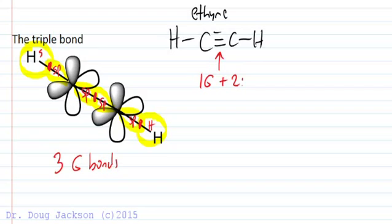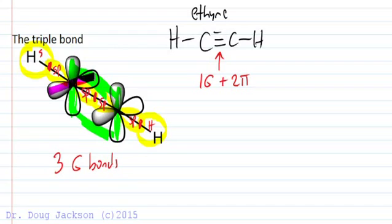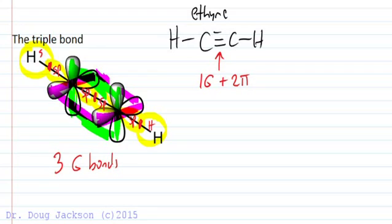The other two bonds in the triple bond are pi bonds. The py orbital, oriented straight up and down along the y-axis, overlaps to form one pi bond. The pz orbital for each carbon, in the plane coming toward and away from us in the page, overlaps perpendicularly to the py orbital to form a second pi bond. So the triple bond is composed of one sigma and two pi bonds. Overall, ethyne has three sigma bonds and two pi bonds — five total bonds, which matches the five lines in the Lewis structure.